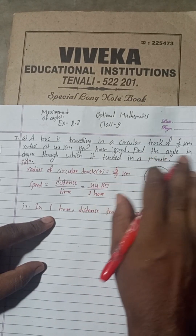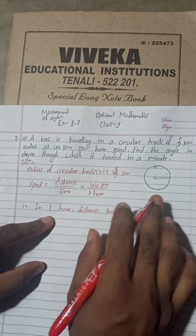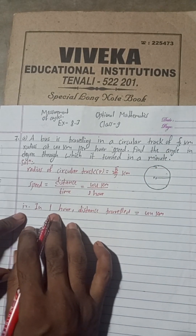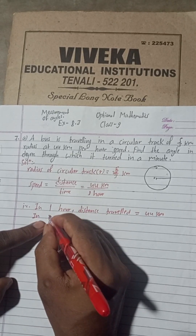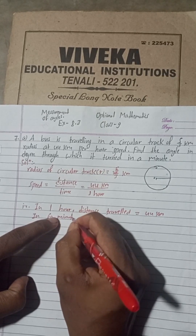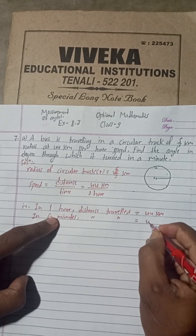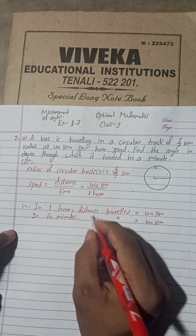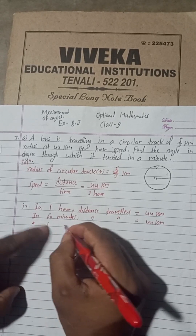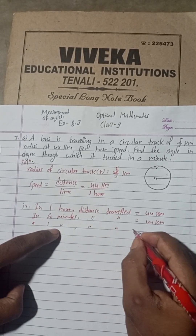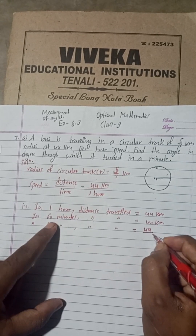The question asks to find the angle in degree through which it turned in a minute. So we have to calculate for one minute. Therefore we have to change one hour into minutes — one hour is equal to 60 minutes. Distance traveled is 44 kilometers in 60 minutes. In one minute, distance traveled is equal to 44 divided by 60 kilometers.